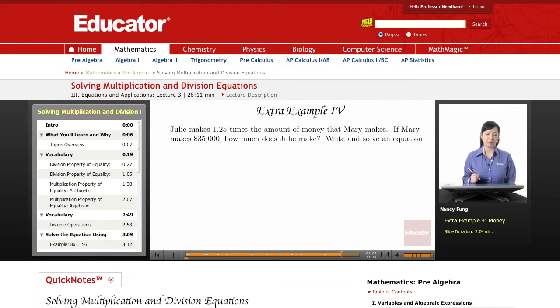So first off, let's try to understand what the problem is saying. Julie makes more than Mary does because she not only makes 100% or 1 times what Mary makes, she also makes an additional 0.25 or 25%. So when we get our final answer, we want to make sure that Julie is making more than $35,000.